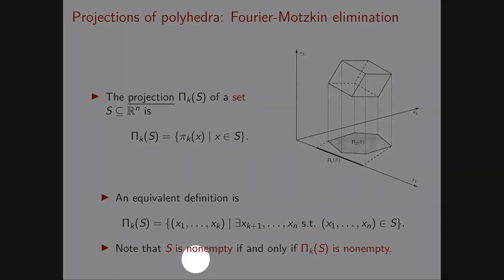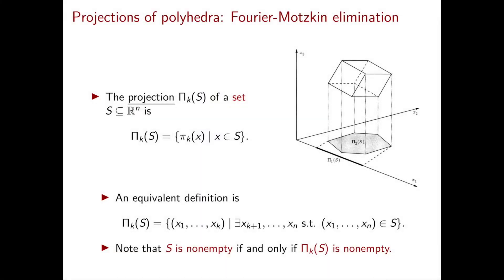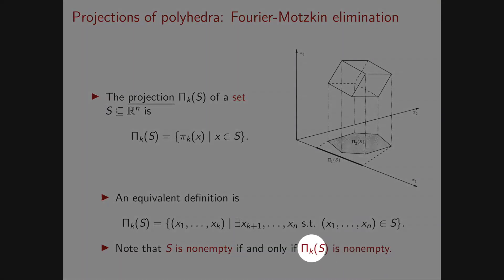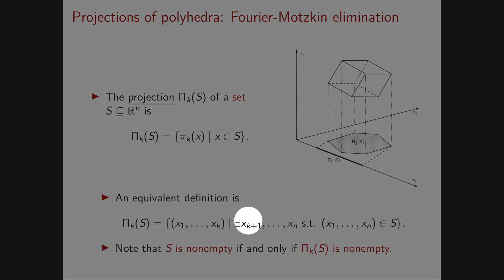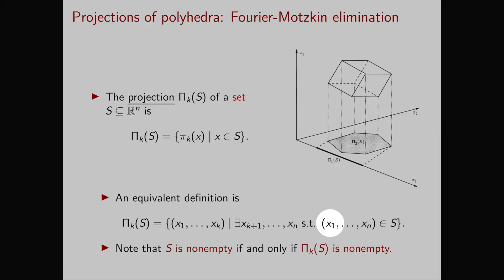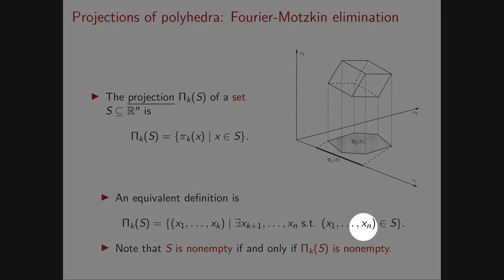In fact, if S is non-empty, it contains a vector x1 until x_n, and the corresponding vector x1 until x_k is in pi_k(S), therefore it's non-empty. Vice versa, if you have a vector x1 through x_k in the projection, then there exists a way of extending it with n minus k more components, such that the vector obtained from x1 through x_k by appending x_{k+1} until x_n is in S, therefore S is non-empty.